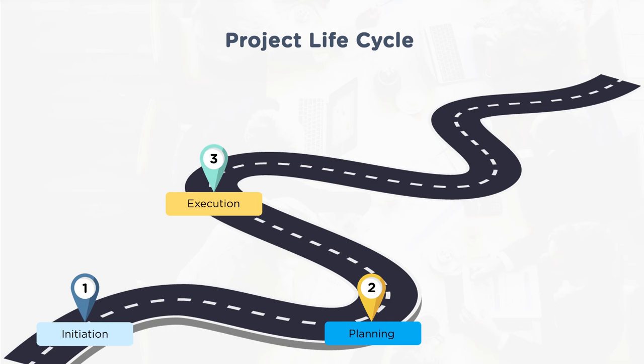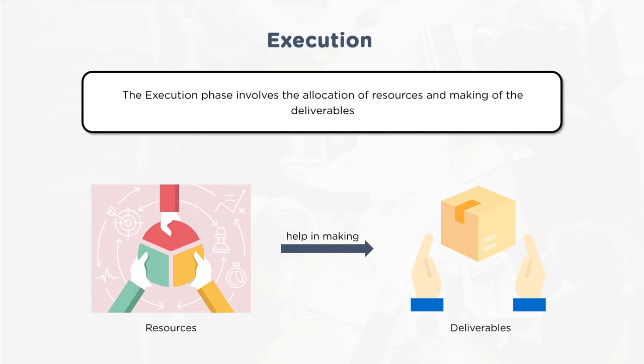With the blueprint set and the project direction established, execution begins — acquiring resources and implementing them. Execution involves the allocation of resources and producing deliverables. Human resources must be educated about project requirements and managed as a team with a clear structure. Technology resources must be tested, configured, integrated, and tested again for performance. These collective actions result in a deliverable during execution.